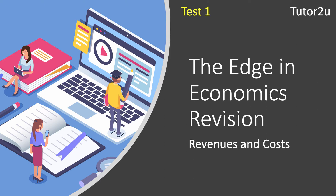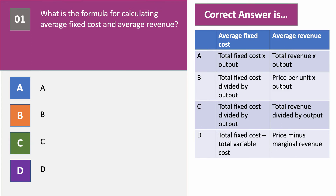This section is to do with revenues, costs, and profits. Question one: what is the formula for calculating average fixed cost, and what is the formula for calculating average revenue? Press the pause button and press play when you want to go to the answer.